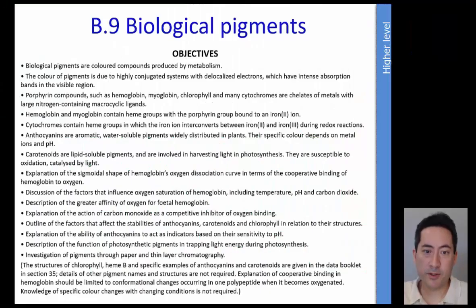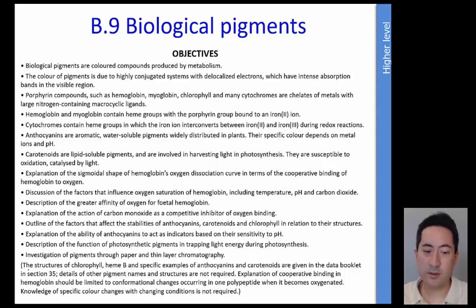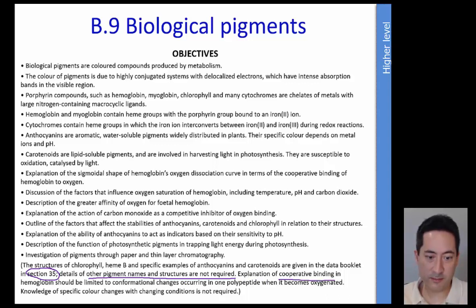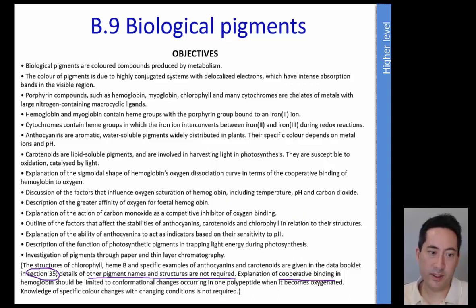Welcome to B.9 Biological Pigments. We need to get through this without being overwhelmed. It's good to go straight to the bottom - these molecules are in section 35, so details of other pigment names and structures are not required. You don't need to know any structures and names; they're all in the data booklet if you need them. You just need to know about cooperative binding and conjugation. There's a lot of stuff to read through with different names of things, but you don't need to know them. Let's just go through the important points.